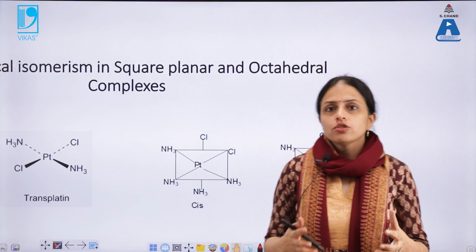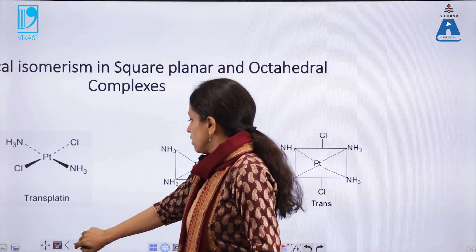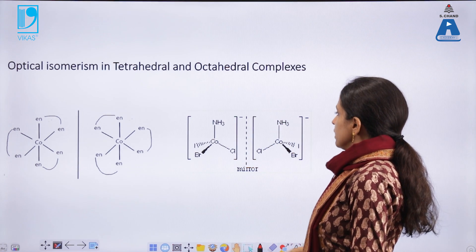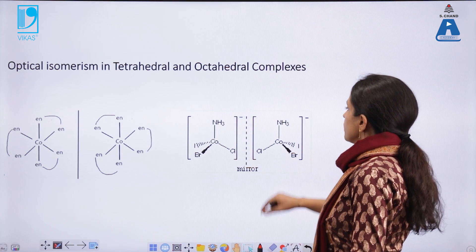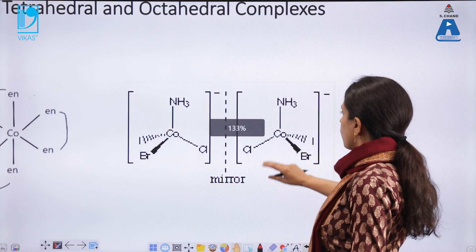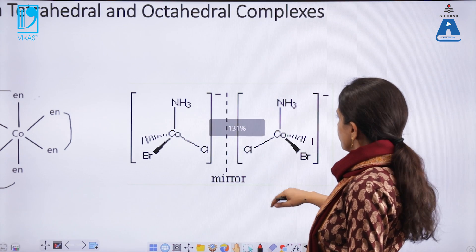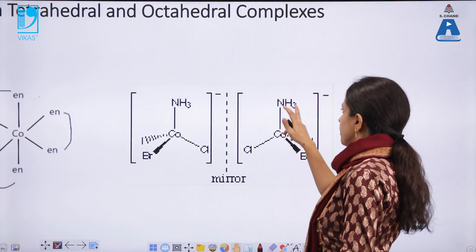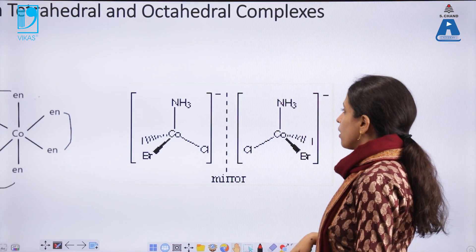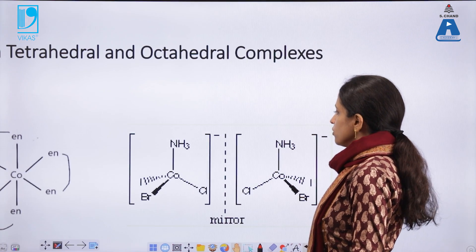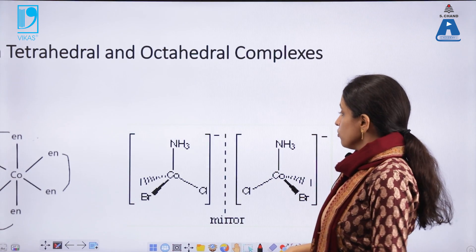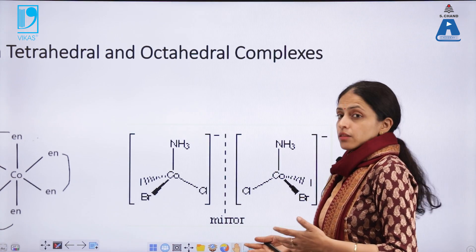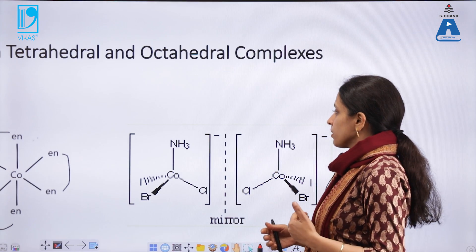Now let's see how transition metal complexes show optical isomerism. On the screen we have a tetrahedral complex of cobalt attached to iodine, chlorine, bromine, and ammonia — all monodentate ligands. If you look at both structures, they are mirror images of each other but are non-superimposable, just like the mirror images we studied in the first lecture on stereochemistry.